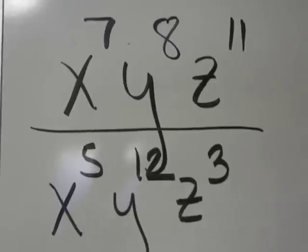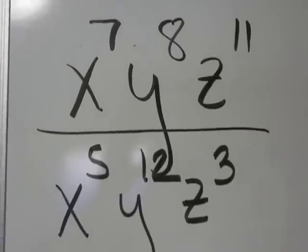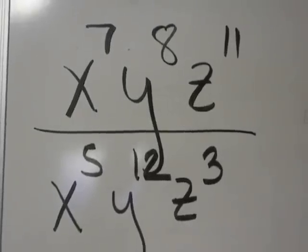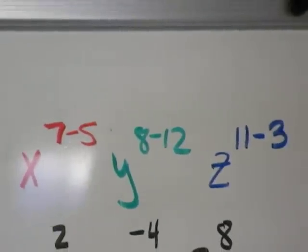So with the x's, you will do 7 minus 5. With the y's, you will do 8 minus 12, and with the z's, you will do 11 minus 3, like this.